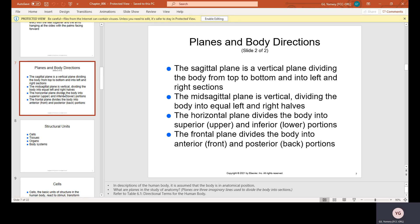The sagittal plane is a vertical plane dividing the body from top to bottom into left and right sections. The mid sagittal plane divides the body into equal left and right halves. The horizontal plane divides the body into superior upper and inferior lower portions. The frontal plane divides the body into anterior front and posterior back portions.